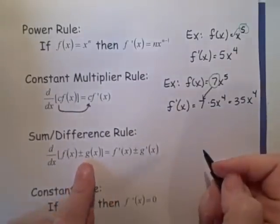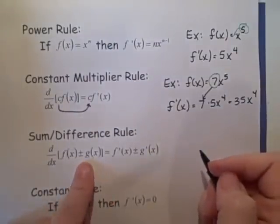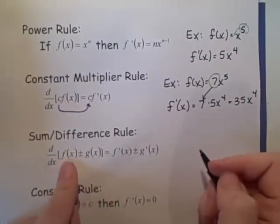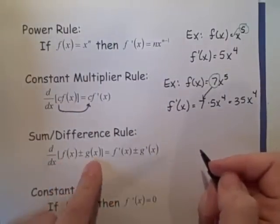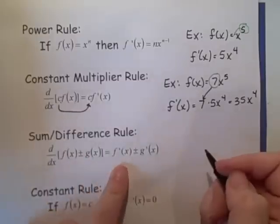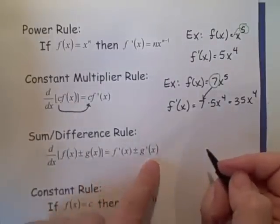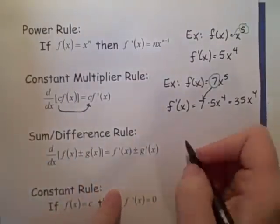Next we have the sum or difference rule, and this tells us that if we have a sum or difference of functions, we just take the derivative of them individually.